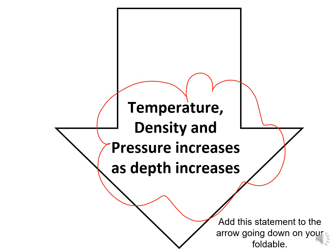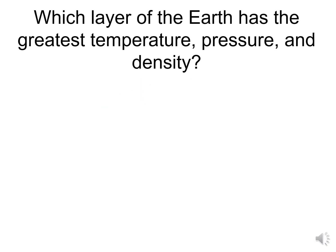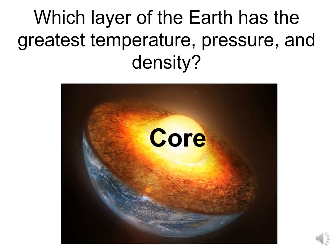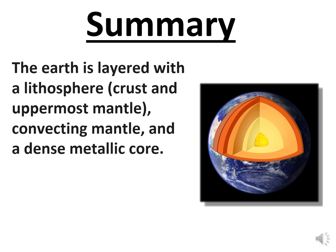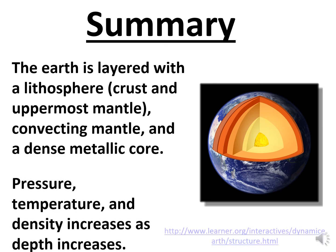Make sure you add this to your drawings and notes. Which layer of the earth has the greatest temperature, pressure, and density? The core — it's in the center, so it receives the most heat, the most pressure, and has the greatest density. To summarize: the earth is layered with the lithosphere on which we live, the convecting mantle, and a dense metallic core where pressure, temperature, and density increase with depth.